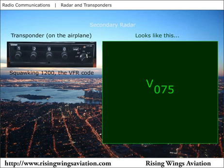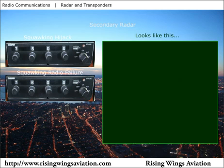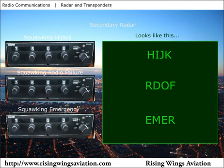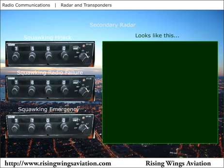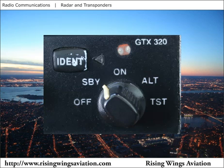Three other standard transponder codes are for emergency use: 7500 for hijacking, 7600 for radio failure, and 7700 for emergency. If a pilot selects one of these codes, all air traffic controllers who receive the code will immediately take appropriate action. For example, if a pilot selected code 7700, every radar facility and range would receive an alert of the aircraft in distress at that location. Since 7700 is the emergency code, an air traffic control instruction to "squawk emergency" is an instruction to set your transponder to code 7700. Be mindful of codes 7500, 7600, and 7700 when selecting a transponder code. Many pilots switch their transponder to standby while changing codes in order to make sure one of these codes is not accidentally transmitted to air traffic control.